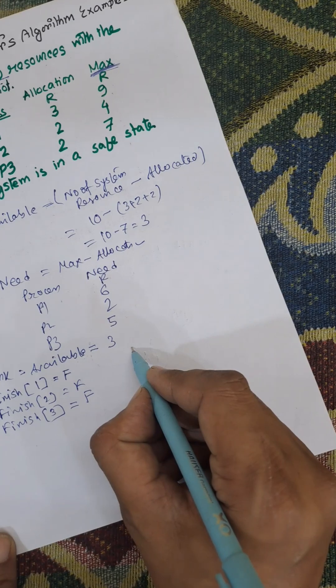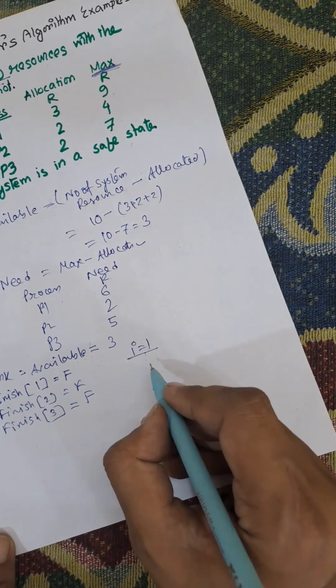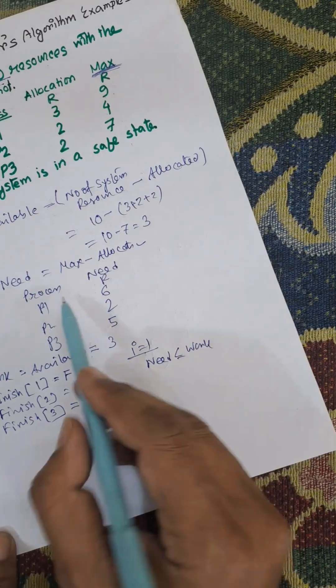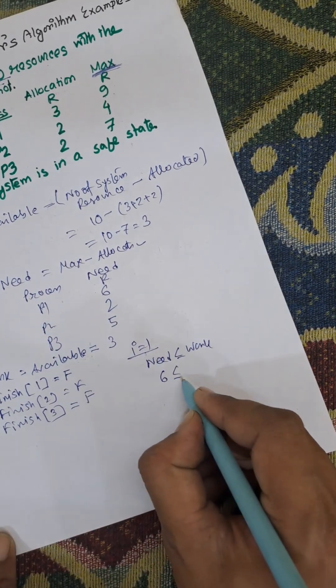Now we need to check when i equals 1, is need less than or equal to work. Need means the need of P1, that is 6 less than or equal to work. No.